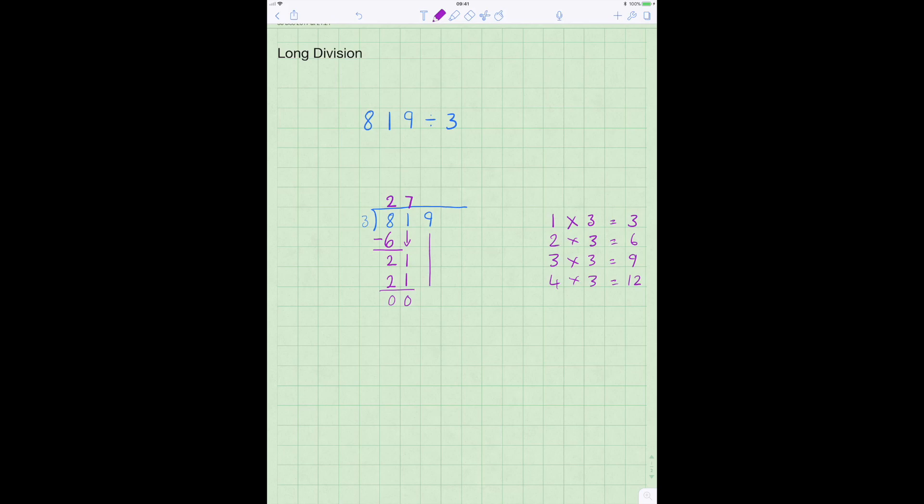And then we need to bring the next number down which is 9. And we ask how many times does 3 go into 9? 3 goes into 9 3 times. And again we write 3 3s are 9 under there and take it away just to check that there are no remainders. And that's the answer.